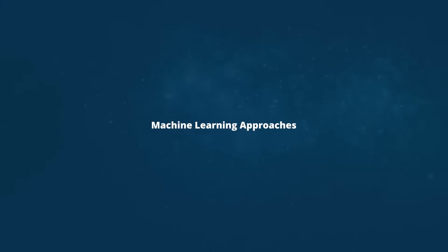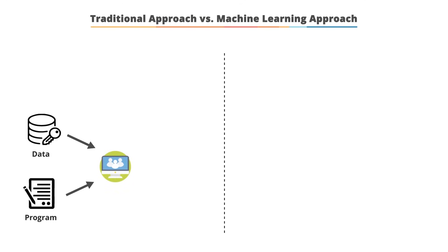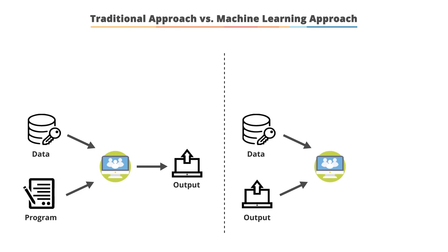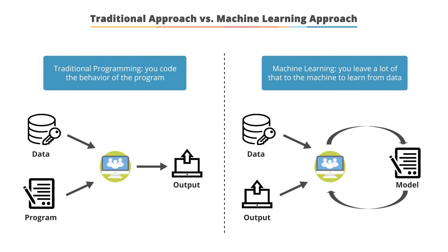Let's understand the different machine learning approaches. In traditional programming, data and a program are provided to the computer, which processes them and gives the output. In machine learning, algorithms are applied to given data and output, and the result is a learning model that helps the machine learn from data. In traditional programming, you code the behavior of the program, but in machine learning, you leave a lot of that to the machine to learn from data.